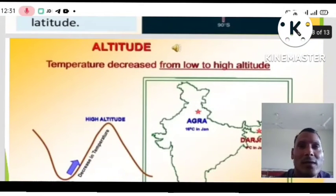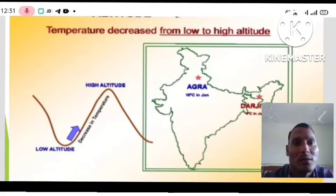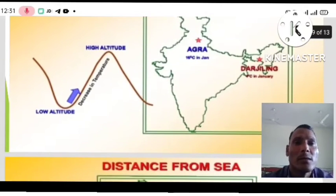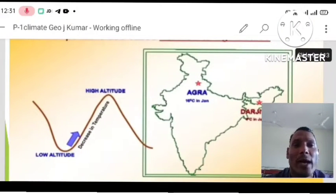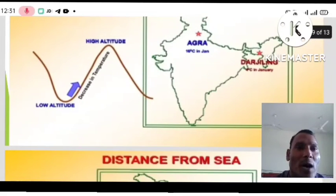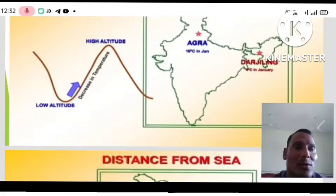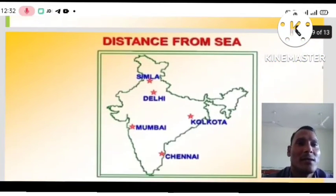Next is altitude. Altitude means height. Temperature decreases from low to high altitude. You can see on the map — the arrow shows low altitude and high altitude, with 'decrease in temperature' written. This means there is a difference based on location: Darjeeling is at a height, so its temperature is less, while Agra is in the plain area at low altitude, so its temperature is higher.